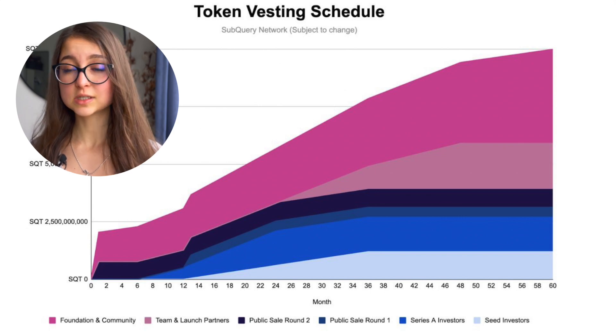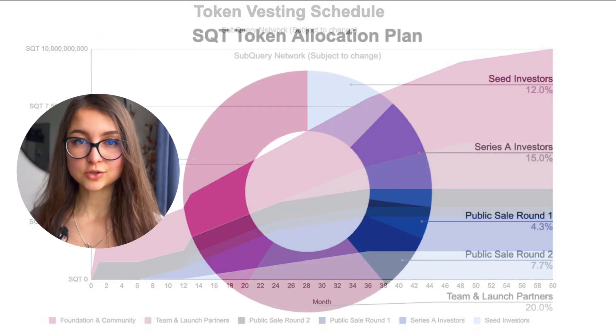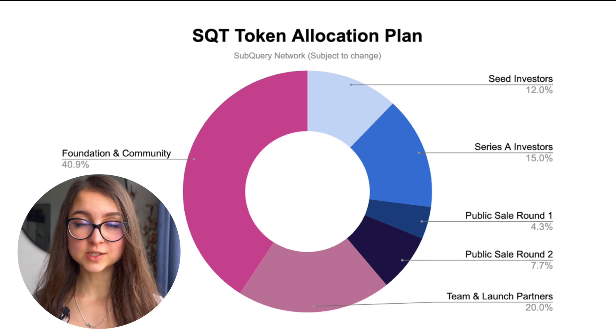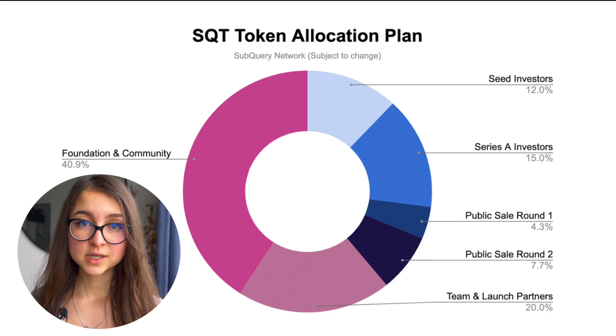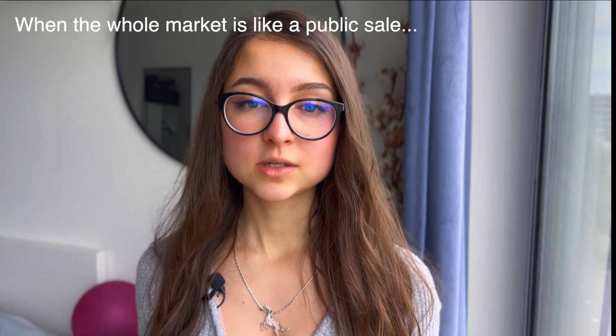That is what is expected, and it is always subject to change. The core team is allocated 20% of the total token supply with a lockup period of two years, followed by vesting over the next two years. The vesting schedules and allocations seem to be well-balanced and well-organized. The only remaining question when deciding whether to invest in SubQuery is the price of the public sale, which will be known later. Links to Discord, Twitter, and subscription announcements will be left in the description.